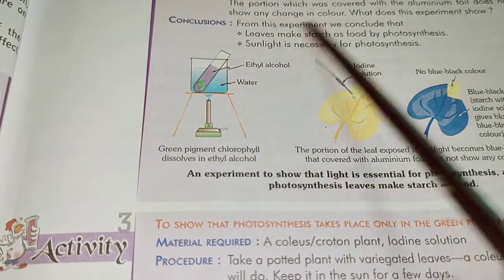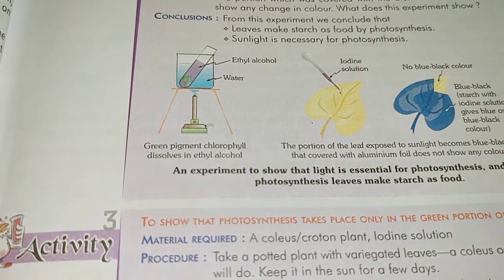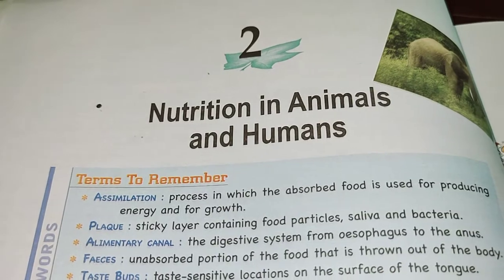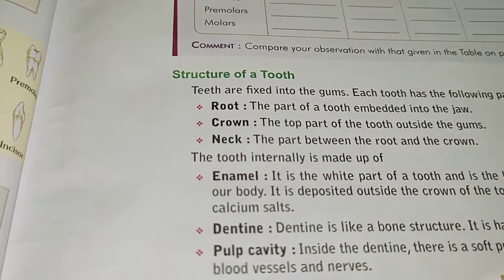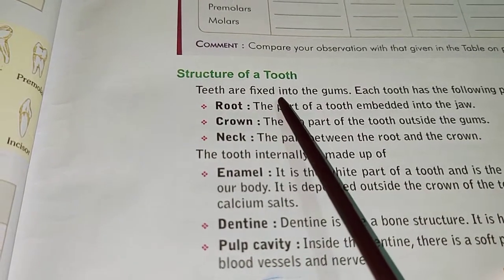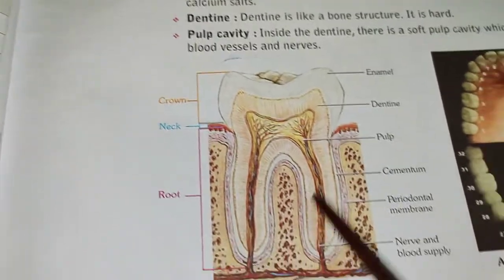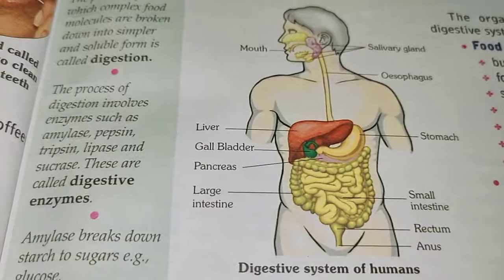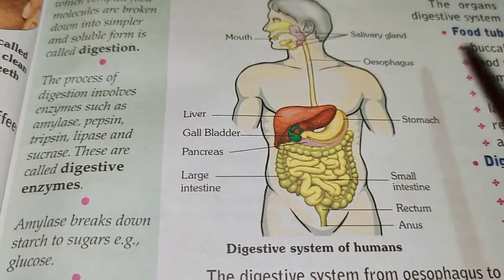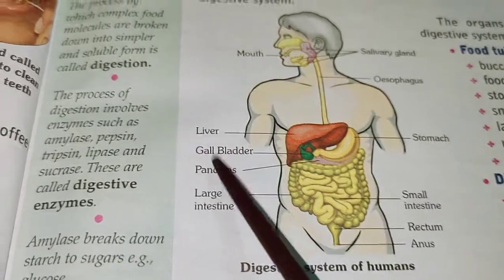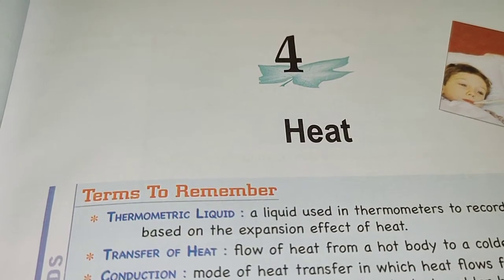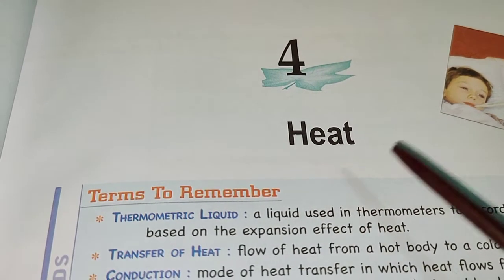Next, Chapter 2: Nutrition in Animals and Humans. Number one, structure of tooth — draw neatly, color, label and describe the structure of the tooth. Number two, draw, color and label neatly the human digestive system.